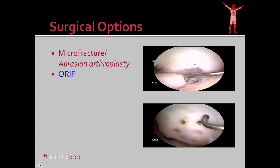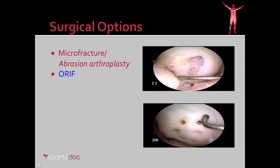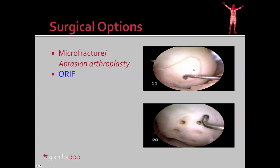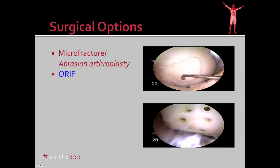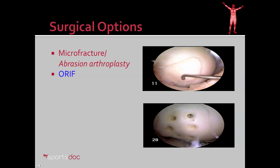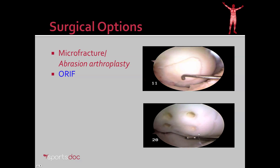ORIF stands for open reduction and internal fixation. Here you can see an osteochondral fragment broken away in the knee on the medial femoral condyle. This fragment keys nicely into position and has a good bony base, making it a very good candidate for ORIF. Various hardware is used to fix that in place — in this case, bioabsorbable screws were used. As the knee goes through a range of motion, you've restored the anatomy and helped limit pain and wear at that site.